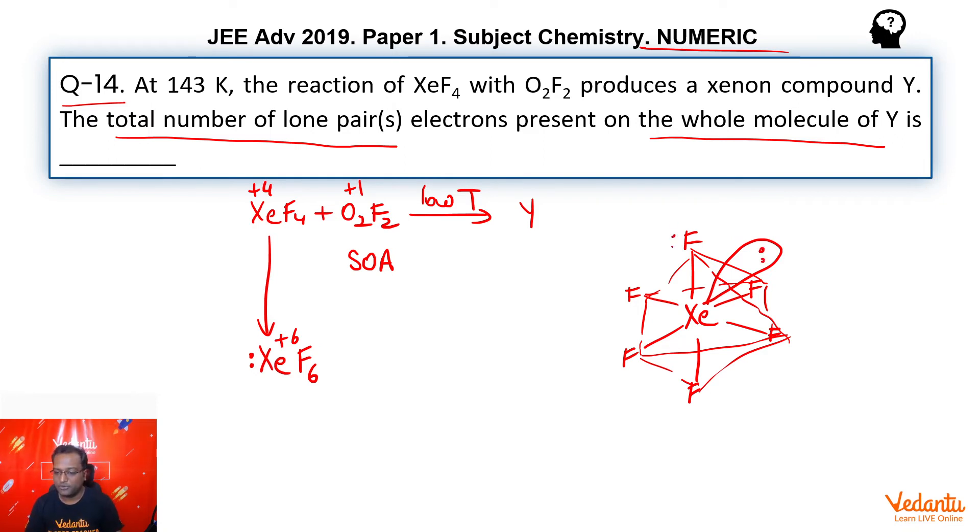Individual fluorines have 3 lone pairs. How many fluorines do I have? I have 6 fluorines. So 18 lone pairs I have on fluorines. One lone pair is present on xenon, right? So total is 19 lone pairs.